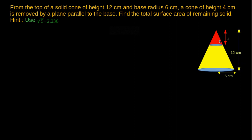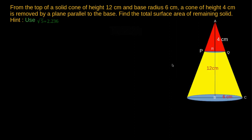To find TSA of the remaining solid, that is, frustum of the cone, let us consider the original cone. For better understanding, let us zoom the given solid. Sum of curved surface area and area of two bases of the frustum gives its total surface area.